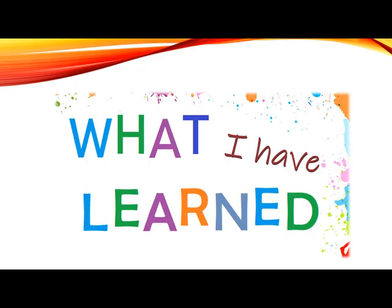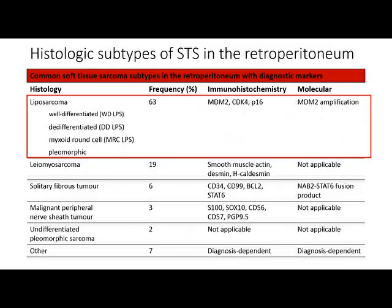What are the lessons learned from this case? Regarding histological subtypes of retroperitoneal sarcoma: liposarcoma contributes to two-thirds of retroperitoneal sarcomas, with four subtypes — well-differentiated, dedifferentiated (as in our case), myxoid/round cell, and pleomorphic. Differentiation between liposarcoma and other retroperitoneal sarcomas is not easy, but immunohistochemistry markers can help in diagnosing the specific subtype.